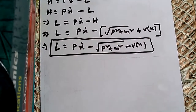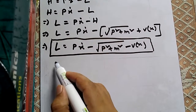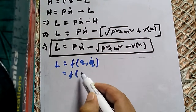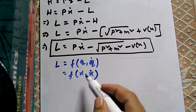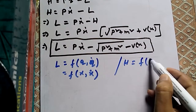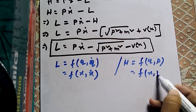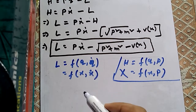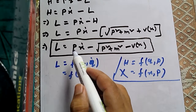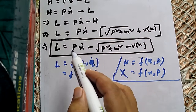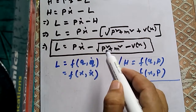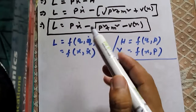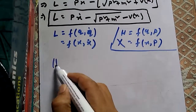We have found the Lagrangian, but remember this is not the correct Lagrangian yet, because the Lagrangian must always be a function of Q and Q̇ — that is, position and velocity. Here the Lagrangian also depends on P, so this momentum must be eliminated. To do that, we find the value of P in terms of x and ẋ using Hamilton's equations of motion.